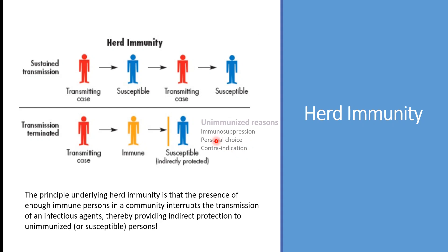Someone may question why we have unimmunized persons within the community. This could be for multiple reasons: a personal choice not to be vaccinated, a contraindication to the vaccine itself, or an immunosuppressive agent that suppressed immunity after the person was immunized. For that reason, there is no way to have a community where 100% of people are immunized. However, we can still protect those people by immunizing the majority of the others.